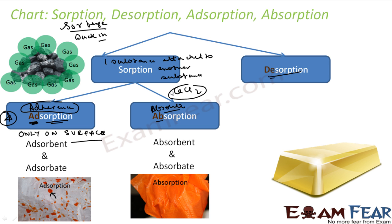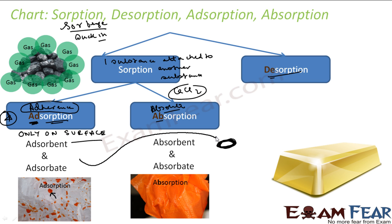Note that absorption and adsorption can both happen together. For example, when chalk is dipped in a solvent containing a dye, the dye is adsorbed onto the surface, but the solvent is absorbed deep inside the bulk. So both can happen simultaneously.